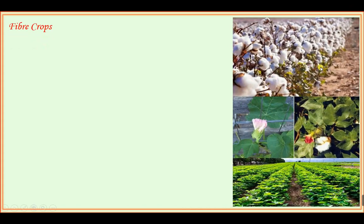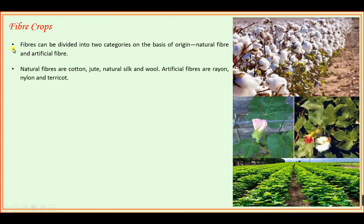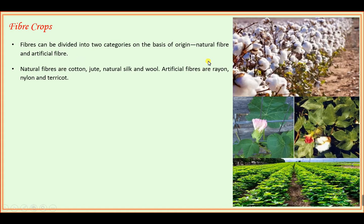In the figure you can see this is cotton, so we are going to start first about cotton. Fiber crops can be divided into two categories: natural fiber and artificial fiber. These plants are naturally growing, so the fiber that comes from them are natural fibers. Artificial fibers are developed from different petrocarbons like plastic, polythene, nylon, and rayon.